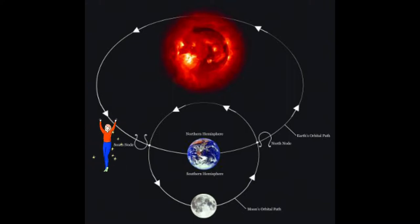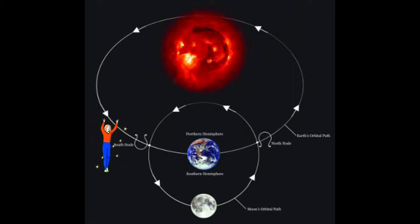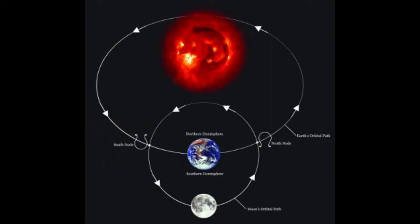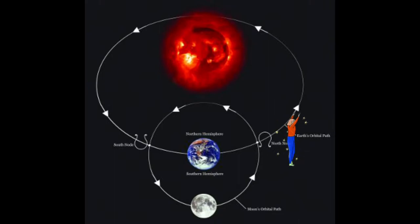is the south node. It represents what qualities you have overdeveloped in past lives — so it's what you lead with, what you are most comfortable with and used to. It's your old hat tricks and charm. The north node is where the moon hits the earth's ecliptic around the sun as the moon ascends to the northern hemisphere as it circles earth. These two points are always in opposition to each other, and they move backwards through the zodiac.